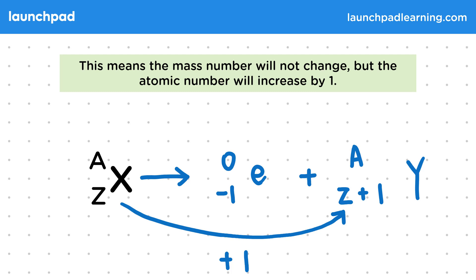We can check the equation is correct by seeing if A and Z are the same on both sides of the equation. You can see why the atomic number of the electron must be minus 1 to balance out the additional proton.